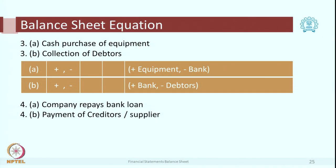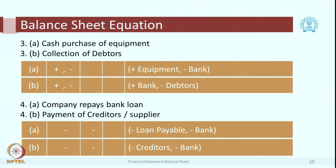Transaction 4A: company repays bank loan. Bank balance will come down and bank loan payable will also come down — minus in bank, minus in bank loan payable. It is the exact reverse of entry number 2. Transaction 4B: payment of creditors or suppliers. We have already purchased some goods and now we pay those vendors — bank balance is reduced and creditors balance is also reduced. Minus in bank, minus in creditors. So A is minus, L is also minus, no change in O.